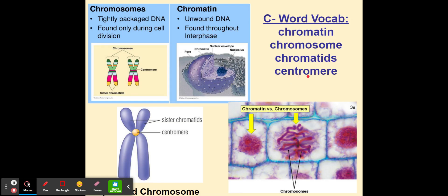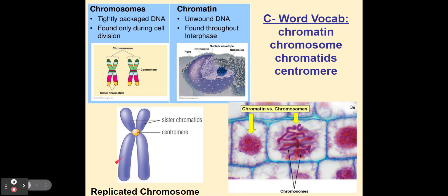There is a lot of vocabulary that goes along with cell division and genetics. Chromatin is unwound DNA typically found throughout the nucleus during interphase, which is prior to cell division. Chromosomes are tightly packaged DNA found only during active cell division — prophase, metaphase, anaphase, and telophase. This image shows interphase on the left, where chromatin is thin and thread-like, and then as chromatin condenses and thickens into chromosomes, they become visible under the microscope. This is prophase, the first stage of cell division, showing replicated chromosomes composed of sister chromatids attached at the centromere.